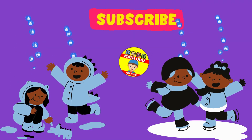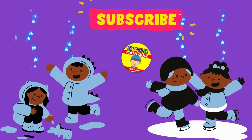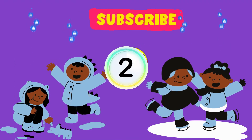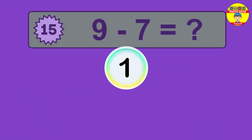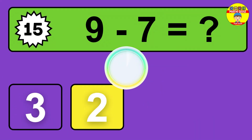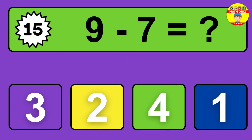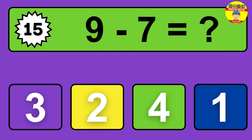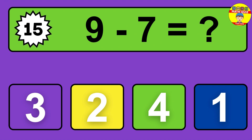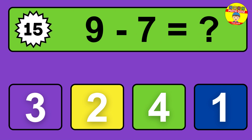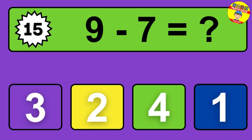Question sixteen: nine minus three equals what? So the answer is nine minus three is six. Let's count it — one, two, three, four, five, six.